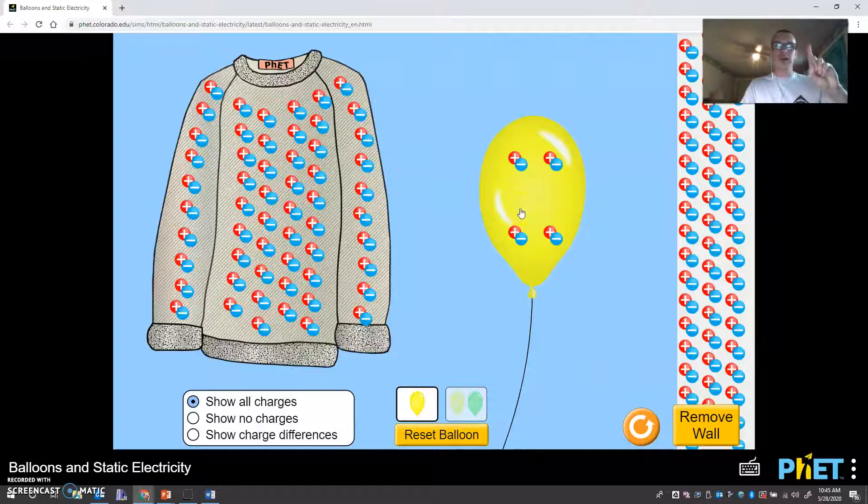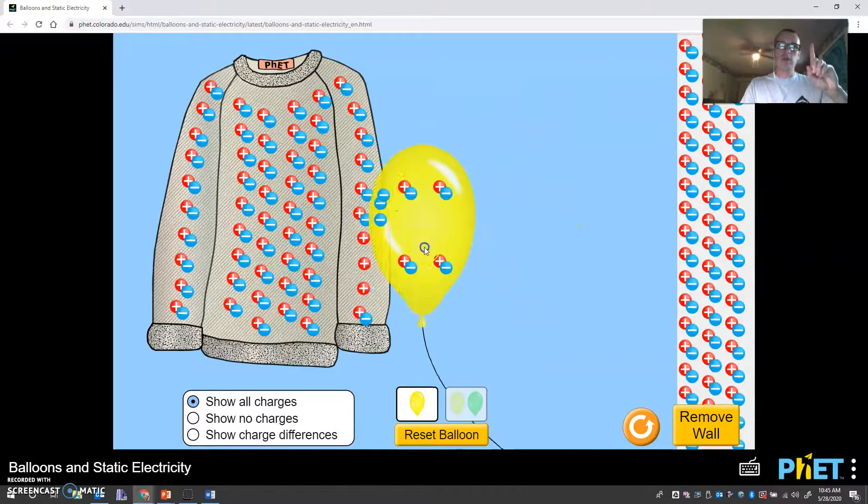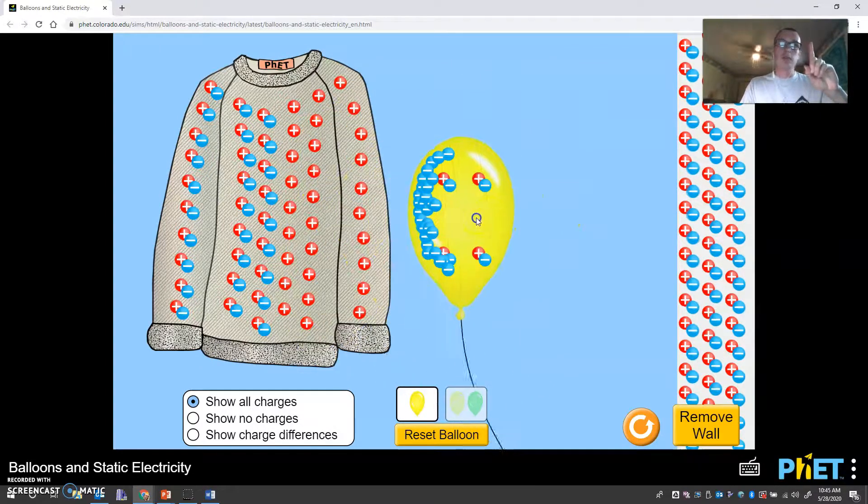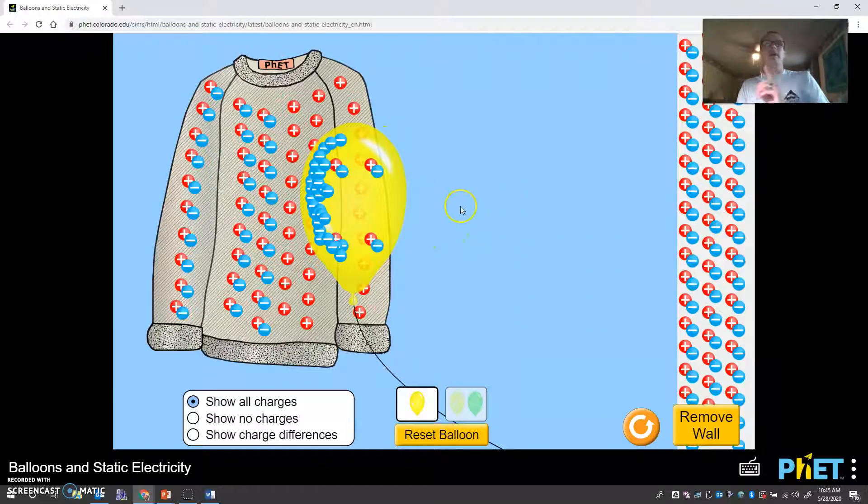So let's review a few things. First, what particles move? The positives or the negatives? Electrons are negative. Electrons move. If I rub the balloon on the sweater, look at what's happening. Which particle is moving from the sweater to the balloon? Ah, that's the negative charge. That's the electrons. Okay, cool. So we're rocking and rolling with static charge.